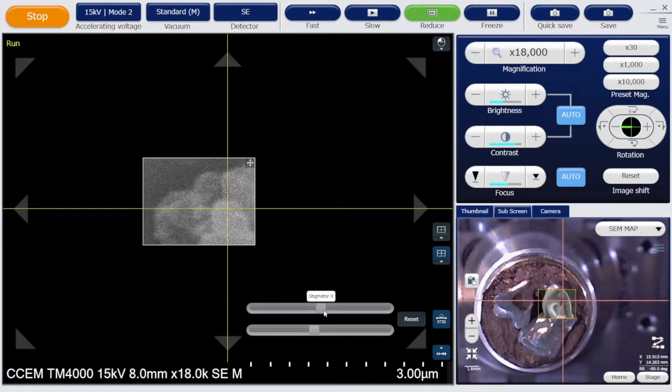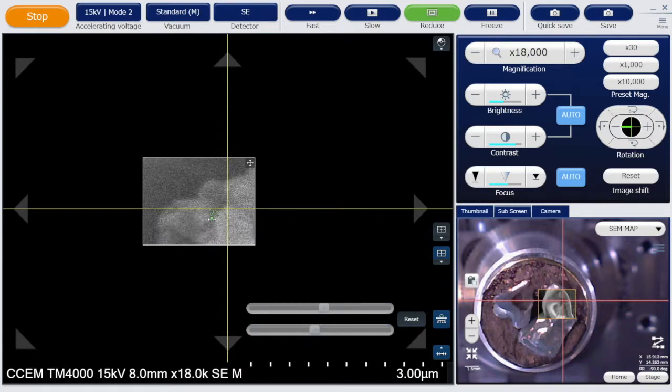Once you have manually set the focus and astigmatism, do not use the auto focus button unless you move to a new location. You can still use the auto brightness and contrast button when changing magnifications.